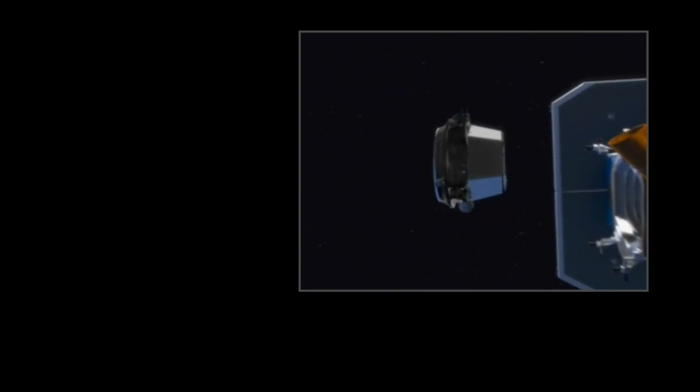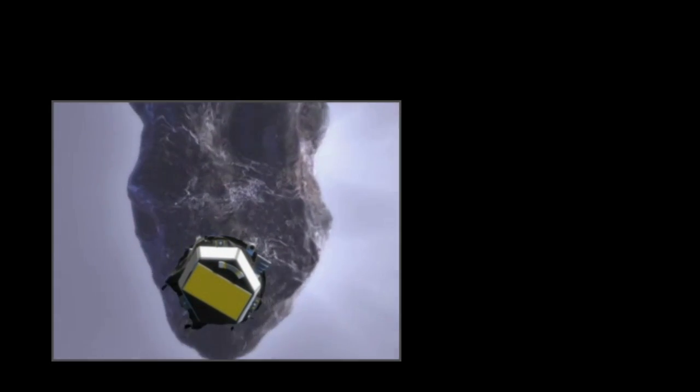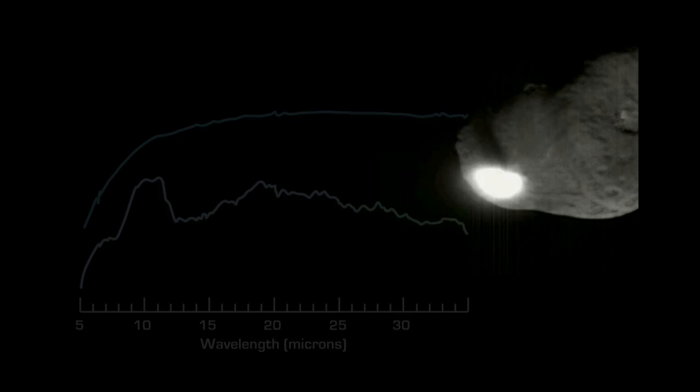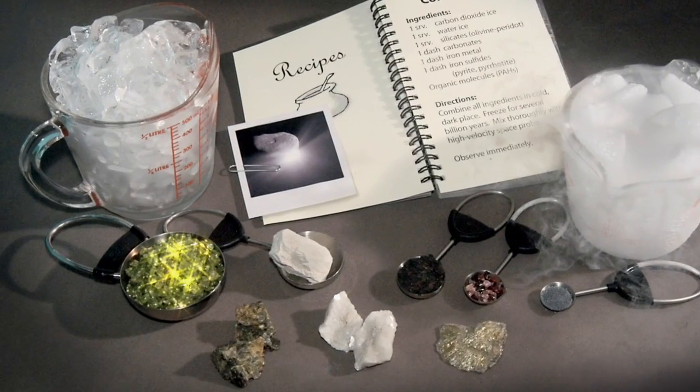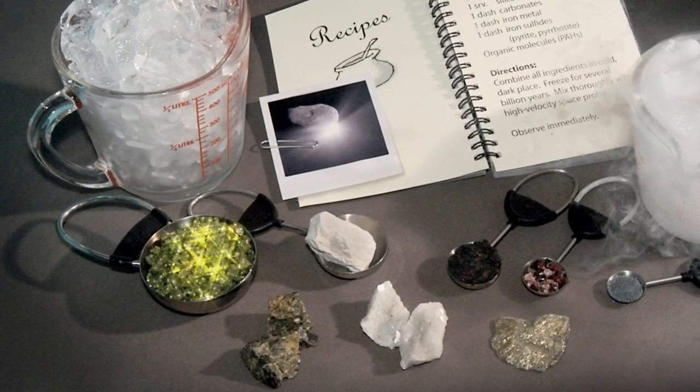On July 4, 2005, NASA's Deep Impact probe smashed into the comet Tempel 1. Spitzer's spectrograph observed the plume of ejected material and found the comet contained the same kind of crystalline olivine.